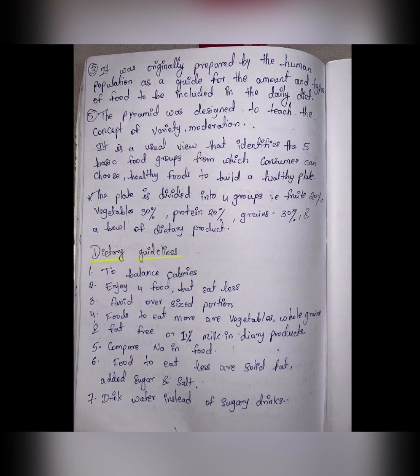Foods to eat more include vegetables and whole grains. Choose fat-free or 1% milk in dairy products. Compare sodium in foods. Foods to eat less include solid fat, added sugar, and salt. Drink water instead of sugary drinks. If you liked the video, please like, share, and subscribe.